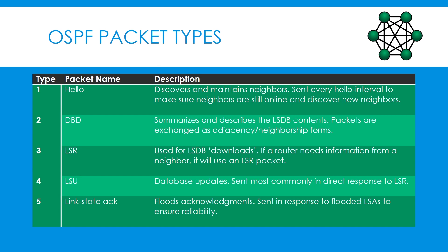The five packet types are: first, the hello packet, which is used to discover and maintain neighbors. Next is the DBD or database description packet, which summarizes and describes the contents of the link state database. Then we have the LSR, a link state request packet, used to request information from a neighbor. Then the LSU or link state update, sent in response to the LSR. Finally, the link state ACK or acknowledgement, sent in response to flooded LSAs to ensure reliability.